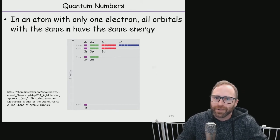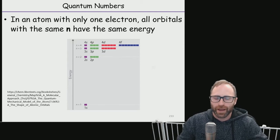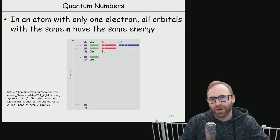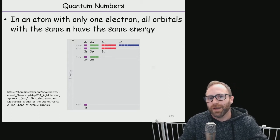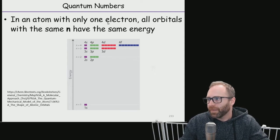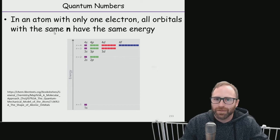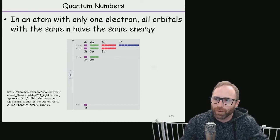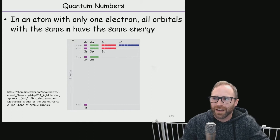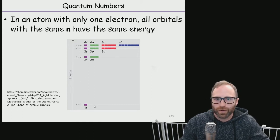If we have an atom that only has one electron in it, so if we have hydrogen or helium in a plus one state or lithium in a plus two state, all those are one-electron systems. The punch line is any orbital that has the same value of n, the same principal quantum number, is going to have the same energy.